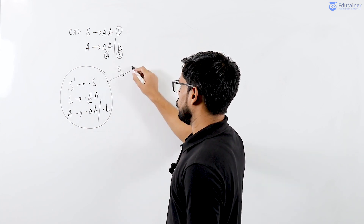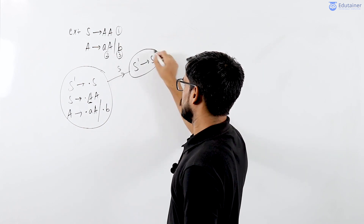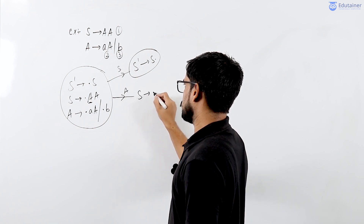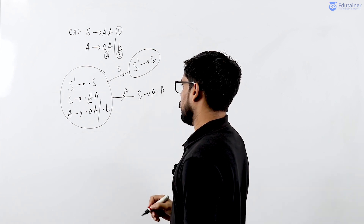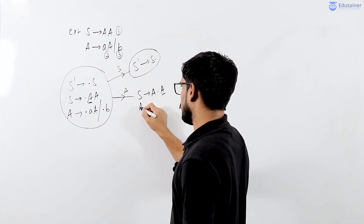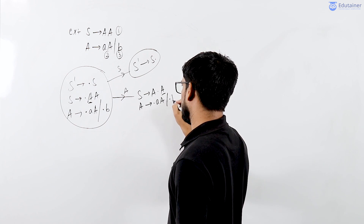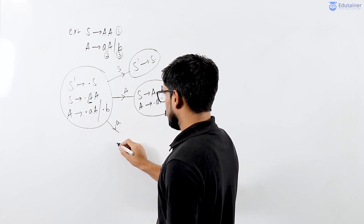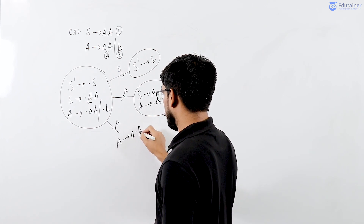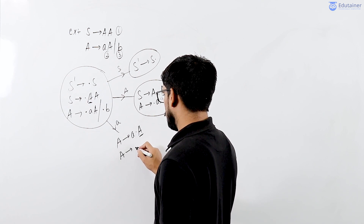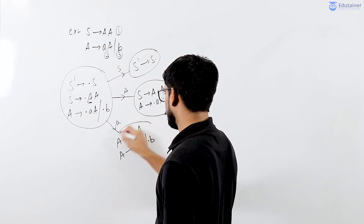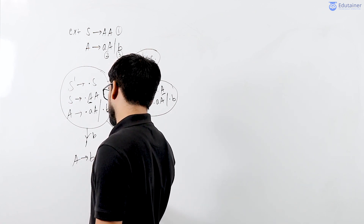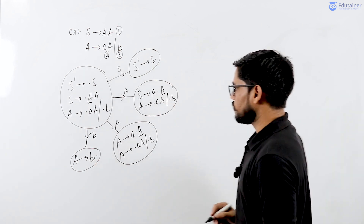For S I will take a goto move: S-dash S derives a dot capital A. For this capital A I need to add the production of A — A derives dot AA or dot B. For small a I need to add the production of A: A derives dot AA or dot B. For small b I have taken a shift move: A derives B dot, and this is the final item.